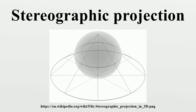The conformality of the stereographic projection implies a number of convenient geometric properties. Circles on the sphere that do not pass through the point of projection are projected to circles on the plane. Circles on the sphere that do pass through the point of projection are projected to straight lines on the plane. These lines are sometimes thought of as circles through the point at infinity, or circles of infinite radius. All lines in the plane, when transformed to circles on the sphere by the inverse of stereographic projection, intersect each other at infinity. Parallel lines, which do not intersect in the plane, are tangent at infinity.